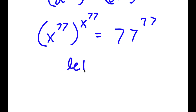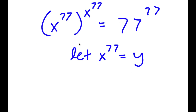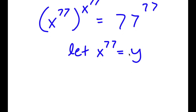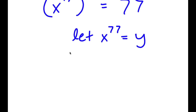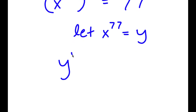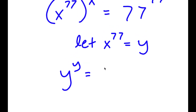Now I'm going to let x to the power of 77 equal the variable y. Substituting y in for x to the power of 77, I get y to the power of y is equal to 77 to the power of 77.